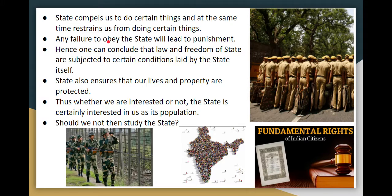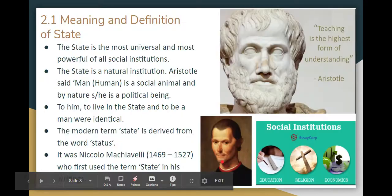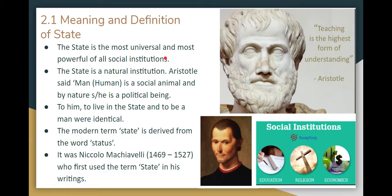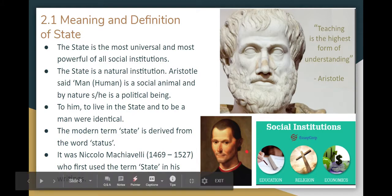Our life and our property are protected by the state. The state is the universal social institution — universal, powerful. Social institutions include family, education, religion, and economics. The state is a natural institution. Aristotle said man is a social animal and a political being.